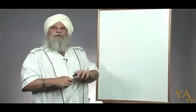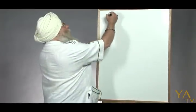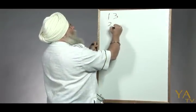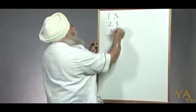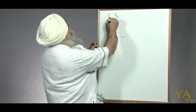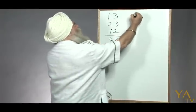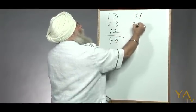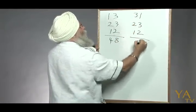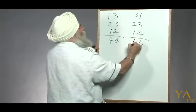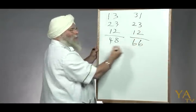Let me give you two examples. Here's an easy one: you're adding up 13, 23, and 12. This adds up to 48. Let's say on the other side, with your debits and credits, you think you've written it down the same way and it adds up to 66.